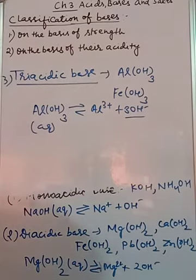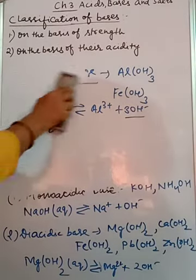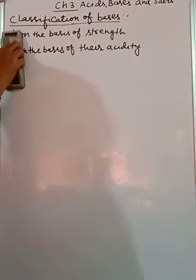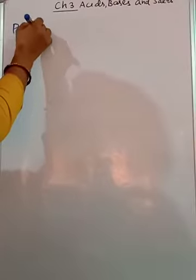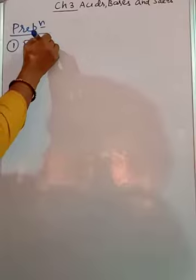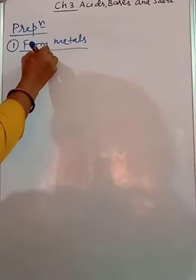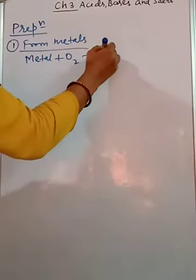Now students we will discuss the preparation of bases. How bases can be prepared. So as we have already discussed, the bases are metallic oxides, hydroxides. So first we are going to see preparation of metallic oxides by reacting or heating with oxygen. So preparation of bases is not very important from examination point of view but we can see that. So first is from metals. In this case the typical reaction will be metal plus oxygen gives metallic oxide.